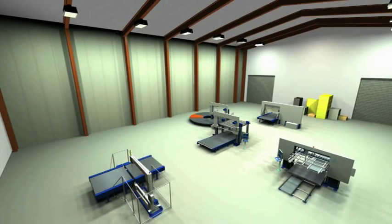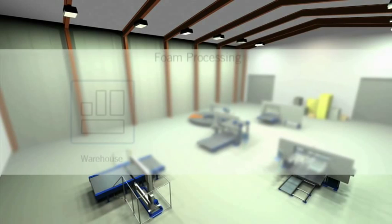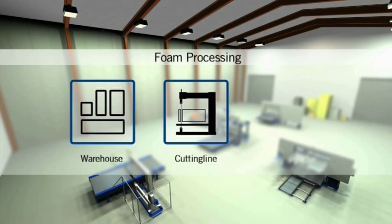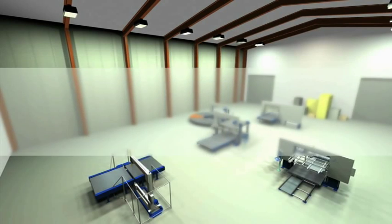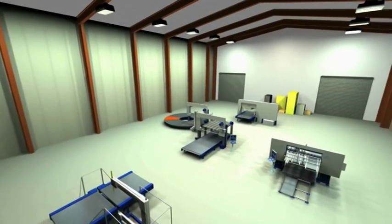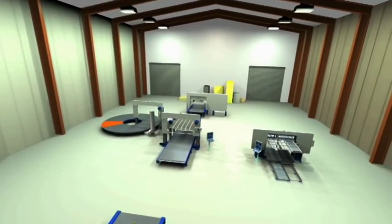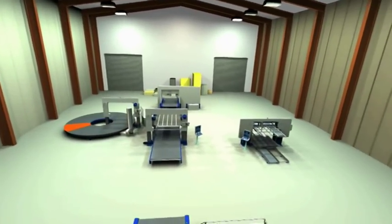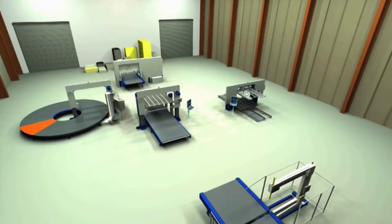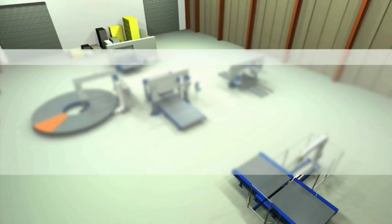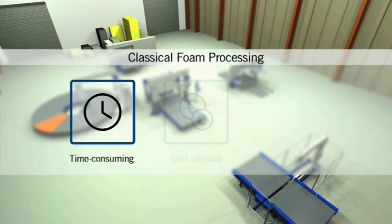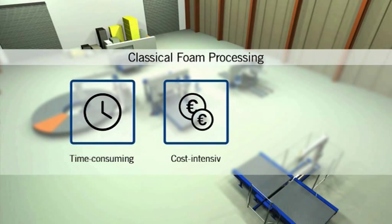Processing steps are not interlinked. Before the block of raw material leaves the factory as a contour cut, mattress, or mattress sheets, it travels a long way from the warehouse to the final cut. This process has so far always been time-consuming and has required high levels of cost and staffing.